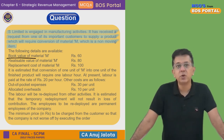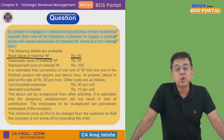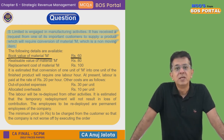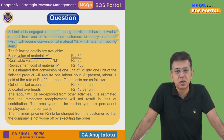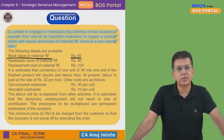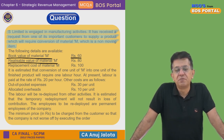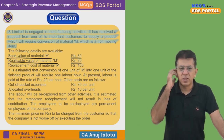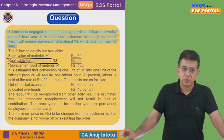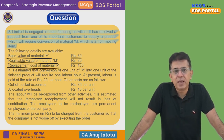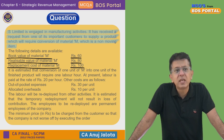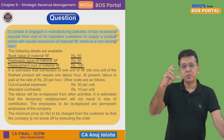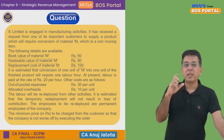The following data is available: Book value of material M is ₹60 — that is the original purchase cost recorded in financial accounts on a historical cost basis. Realizable value of material M is ₹80 — meaning if you sell it in the market, you get ₹80. Replacement cost of material M is ₹100 — meaning if you go to buy material M from the market today, it would cost you ₹100. This information is all about material, not labor.